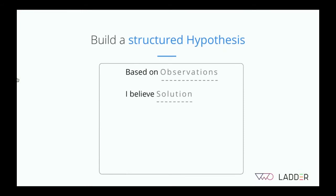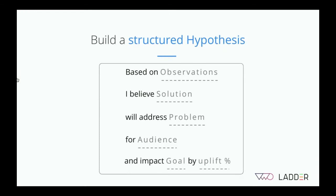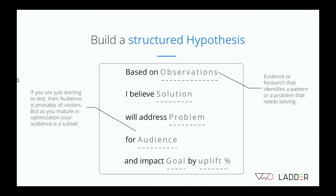The hypothesis framework looks like: 'Based on observations, I believe [solution] will address [problem] for [audience] and impact [goal] by [certain uplift percent].' Observations form the basis from all evidence collected in the research stage. For audience: if you're just starting to test, this would likely be your entire website or major segments. As your testing program matures, you'll notice not every idea is a good fit for every segment, and you'll run tests very specific to different segments — multiple tests catering to multiple segments with multiple hypotheses.